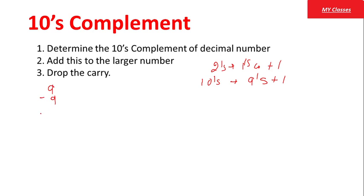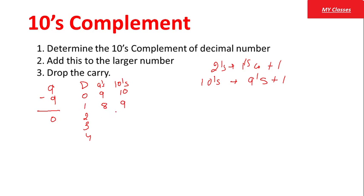Example: 9 minus 9 करते हैं। Decimal numbers 0, 1, 2, 3, 4 के 9's Complements थे 9, 8, 7, 6, 5। इनका 10's complement: 0 का 9's complement 9 था, तो 10's complement बन गया 10 यानी 1,0। 1 का 8, 10's complement 9। 2 का 7, 10's complement 8। 6, 7 — same increasing pattern। 46 का 10's complement: 9-4=5, 9-6=3 → 9's complement = 53, plus 1 = 54। तो 9's complement of 46 is 53, and 10's complement is 54।